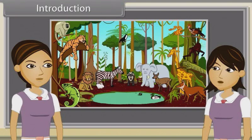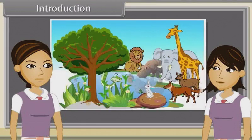Sharmila, now tell me what makes animals different from plants? Plants are multicellular, terrestrial, non-mobile, photosynthetic and autotrophic, while animals are mobile, heterotrophic, multicellular and aquatic, terrestrial or arboreal.